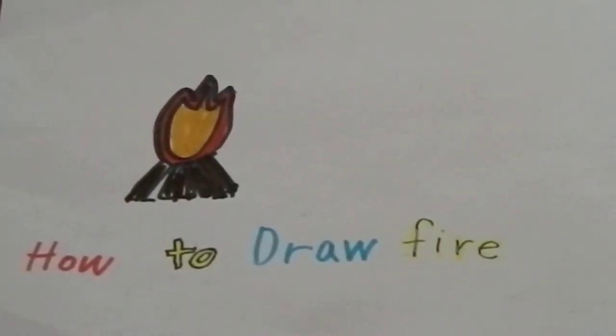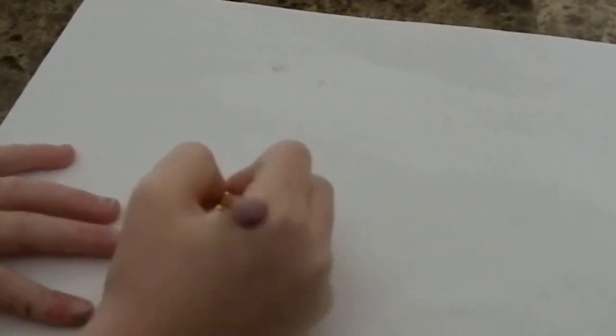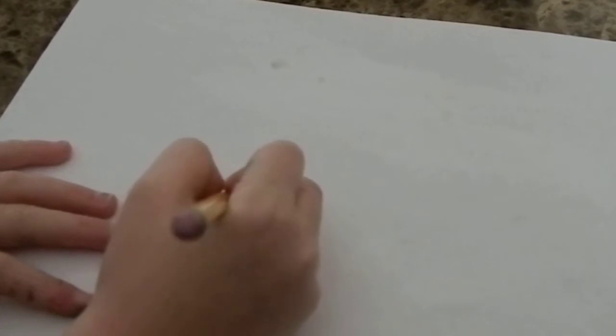Hi everyone, today I'm going to show you how to draw a fire. First, we're going to make a triangle and then draw a line straight down the middle. If you want, you can add some extra lines.